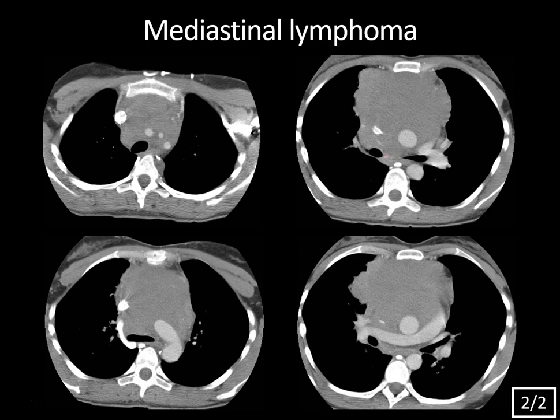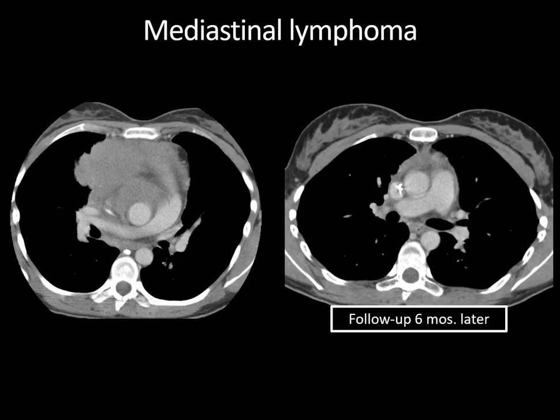Lymphoma is typically treated with chemotherapy and radiotherapy with variable response depending on the type. Early-stage Hodgkin lymphoma has the best prognosis. A follow-up CT scan six months later shows a dramatic decrease in this anterior mediastinal mass — only a small residual anterior tumor remains, and the right pulmonary artery looks much more normal compared to the compressed appearance in the pre-treatment images.